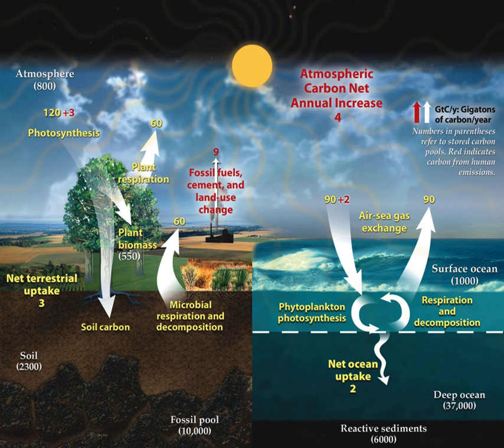Photosynthesis by terrestrial plants is another natural sink. While the creation of artificial sinks has been discussed, no major artificial systems remove carbon from the atmosphere on a material scale.